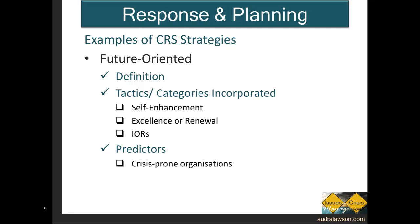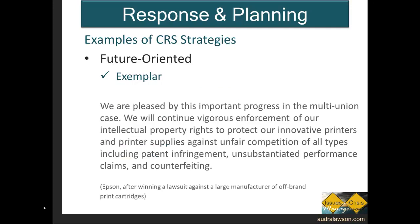One of the strategies that's been identified is a future-oriented strategy. This focuses on an organization's desire to look beyond the crisis to a better future for the organization and its stakeholders. The categories included would be self-enhancement, excellence renewal, and inter-organizational relationships. This strategy is most typically used by crisis-prone organizations. An example comes from Epson after winning a lawsuit against a large manufacturer of off-brand print cartridges. Notice the technology-based company's focus — not only on criticizing the company they won the lawsuit against, but also moving forward. There's quite a firm tone, painting itself as a bit of a hero fighting those who would seek to steal from it.